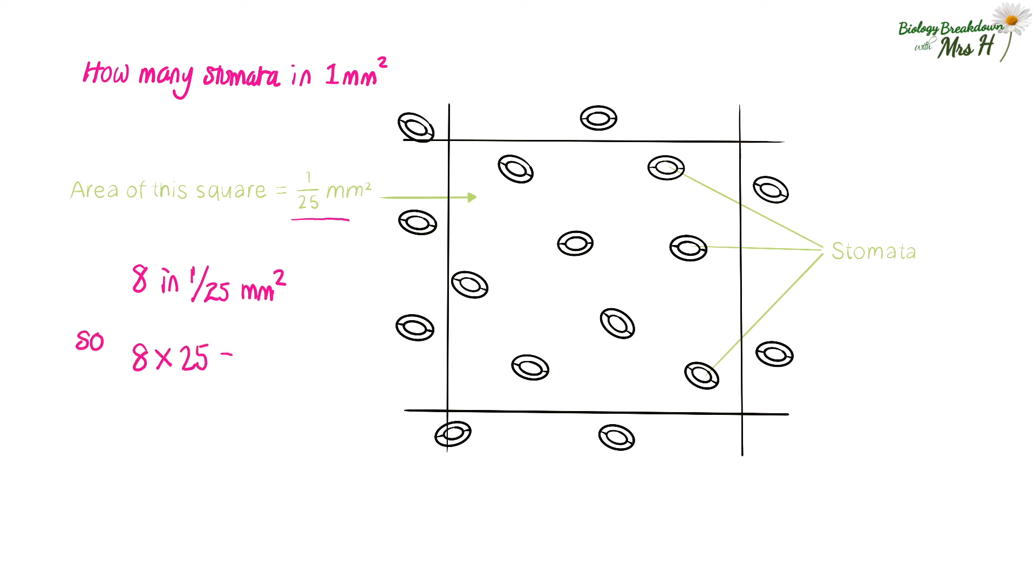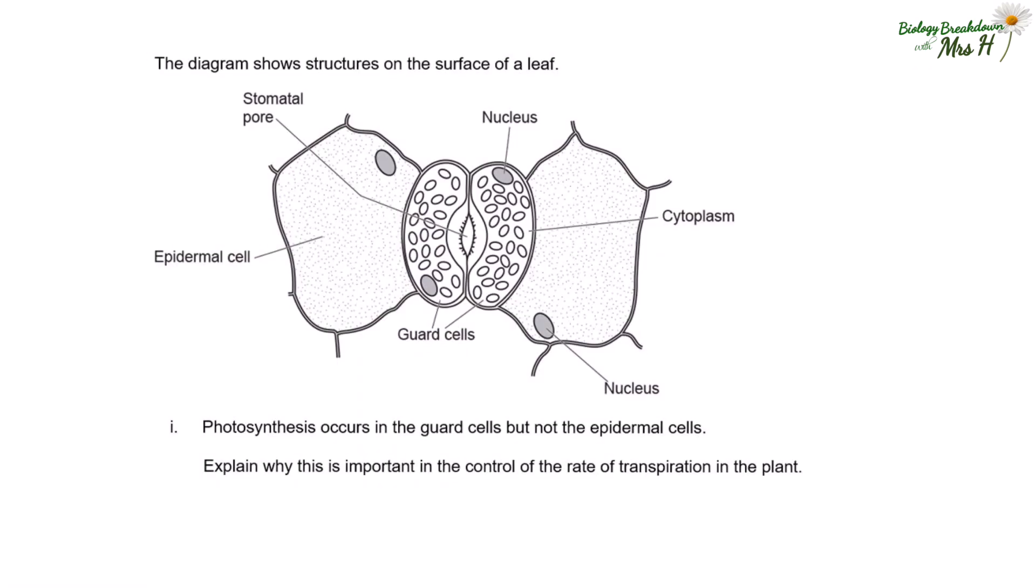And I want to show you this question which is really hard. You know how level 9 is the hardest, the highest level for GCSE? I think this question is like a level 11, so if you can do this, that is pretty, pretty impressive. The diagram shows structures on the surface of a leaf. Photosynthesis occurs in the guard cells but not the epidermal cells. Explain why this is important in the control of the rate of transpiration in the plant. Well, we know from the previous video that for the stomatal pore or the stoma to open, the guard cells need to fill with water and become turgid.